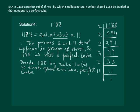And finally, we will have 1188 divided by 44 is equal to 3 into 3 into 3, that is equal to 27. And clearly 27 is a perfect cube.